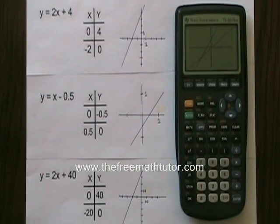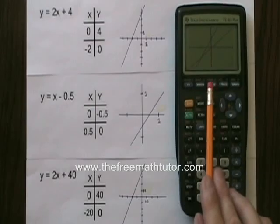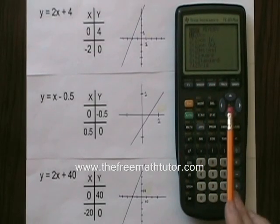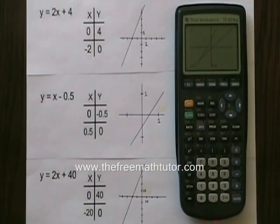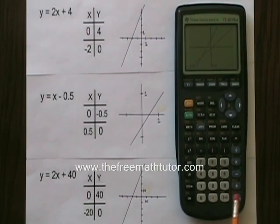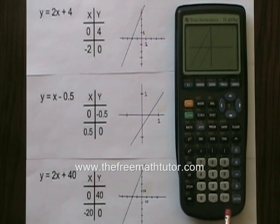But I can only see two of them. And that is because of the scaling on the graph. If I want to be able to see the third line, I am going to have to zoom out. I am pressing the zoom button again. This time I go down to number 3, zoom out. I hit enter to choose it. And if I hit enter again, I am going to zoom out. And I can see all three lines at once.